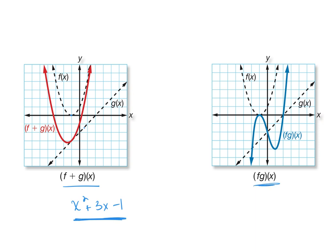When we multiplied those same two functions — a parabola and a line — we ended up with x cubed − 3x − 2, which is a cubic function. Cubic functions have a different shape. The degree went up. When you add or subtract, the degree doesn't change. But when you multiply or divide, you are potentially changing the degree of your final function — it went from squared to cubic.